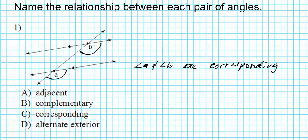Let me show you another pair of corresponding angles. Looking at the left side of the transversal underneath the parallel lines — these two are corresponding angles because they're in exactly the same position at the points of intersection. You have four pairs of corresponding angles in total. The answer to question number one is option letter C.